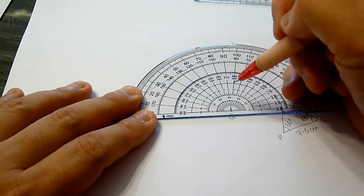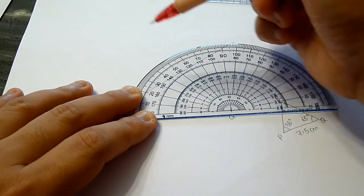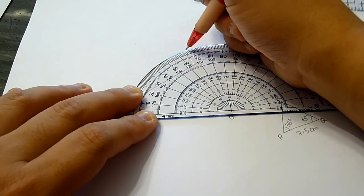We place the center of the protractor at Q and measure 65 degrees from the arm.